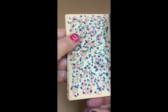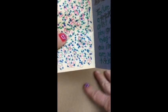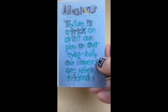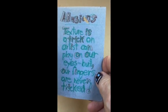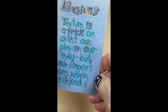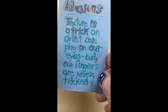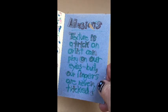Just glue them back down. So I see again. And they reseal, but when you feel it, you don't feel anything like this. And I wrote in the back, 'Illusions.' Texture is a trick an artist can play on our eyes, but our fingers are never tricked. Never.